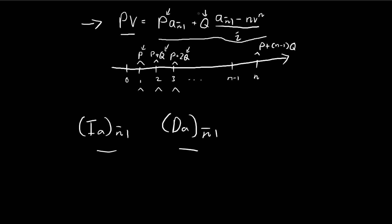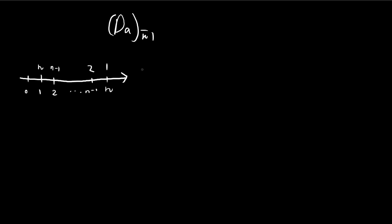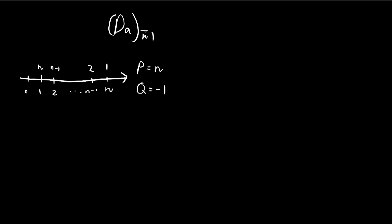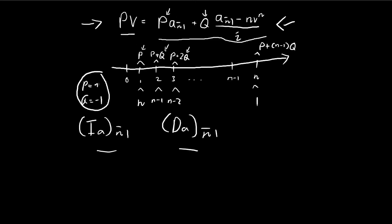Going back to our general increasing annuity formula, the decreasing annuity corresponds to P equal to n and Q equal to negative 1. Substituting these values, at time 1 you receive n dollars, at time 2 you receive P plus Q which is n minus 1, at time 3 you get P plus 2Q which is n minus 2, and this extends all the way to time n where you receive 1 dollar. So P equal to n and Q equal to negative 1 gives us the decreasing annuity.